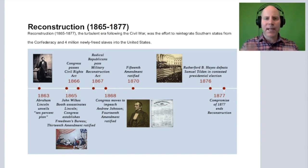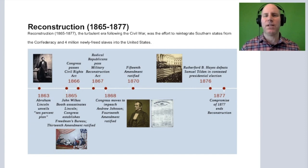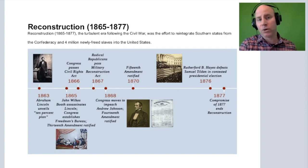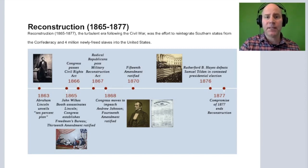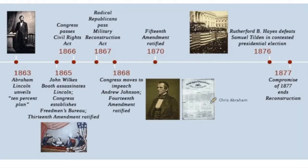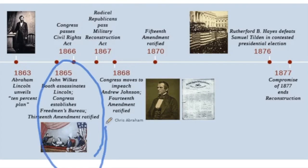We remember from our basic cursory review of Reconstruction that this was a very turbulent time between the North and the South. During this time, the North had imposed federal troops to reinforce major pieces of legislation that had been passed, like the 13th, 14th, and 15th Amendments. In 1865, the year that Lincoln was assassinated, we had the passing of the 13th Amendment, abolishing slavery.